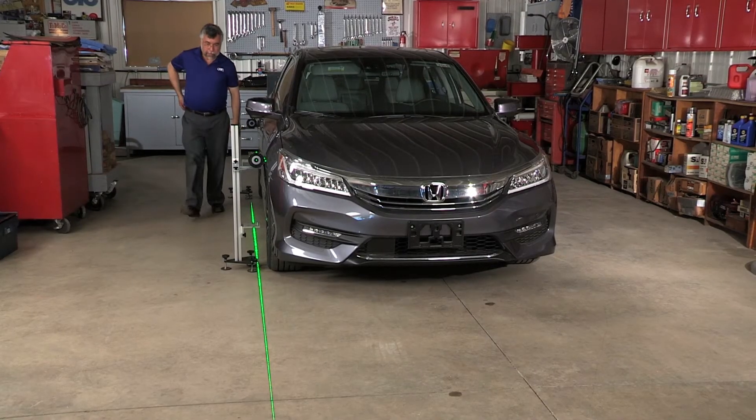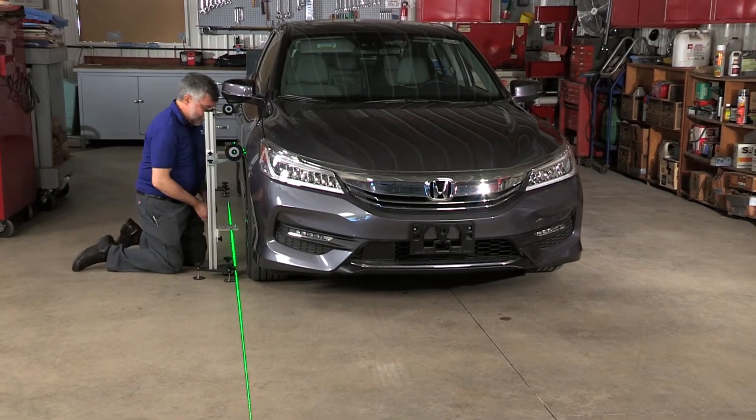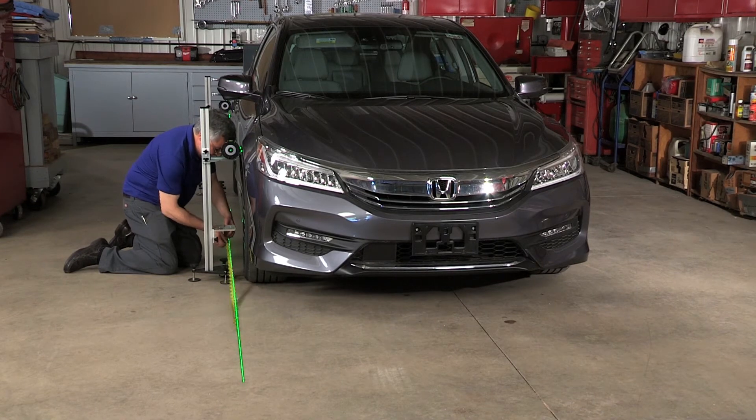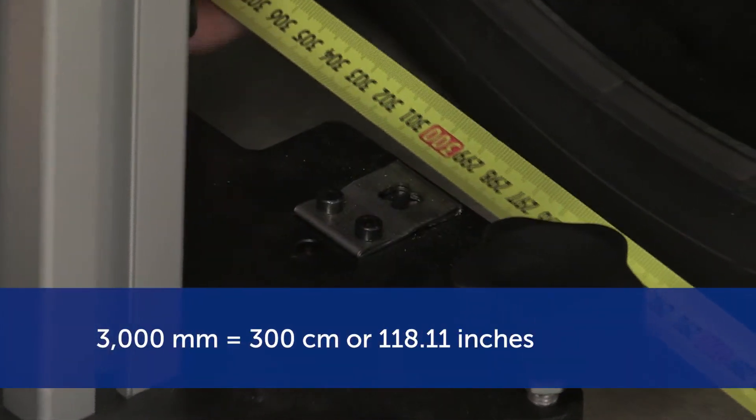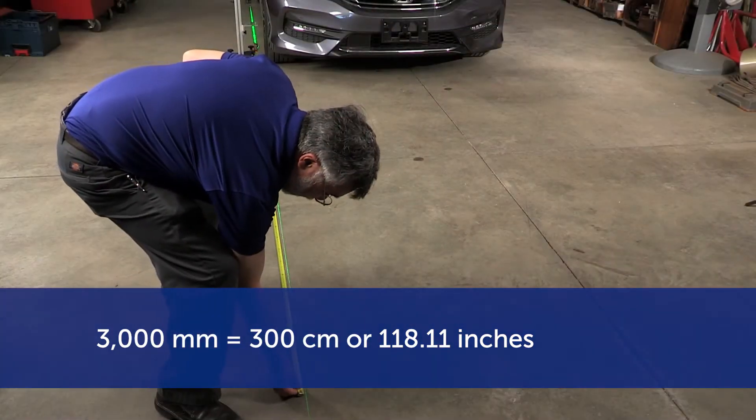Now let us determine the distance of the target stand from the front of the vehicle. With the laser light turned on at the rear wheel centering stand, measure from the front centering stand out 300 centimeters or 118.11 inches and mark your location with masking tape.